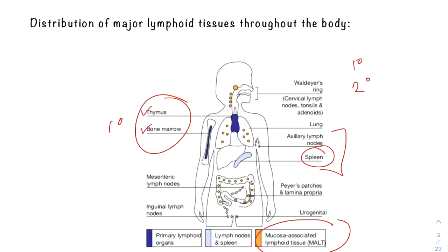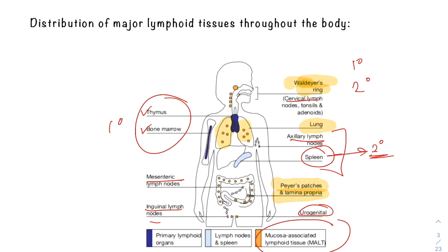The spleen and various lymph nodes — cervical, axillary, mesenteric, inguinal, and urogenital — are the secondary lymphoid organs. A third type included under secondary lymphoid organs is the mucosa-associated lymphoid tissues, which include Peyer's patches and lamina propria in the bowel, Waldeyer's ring in the oral cavity, and the mucosa-associated lymphoid tissue of the lung.